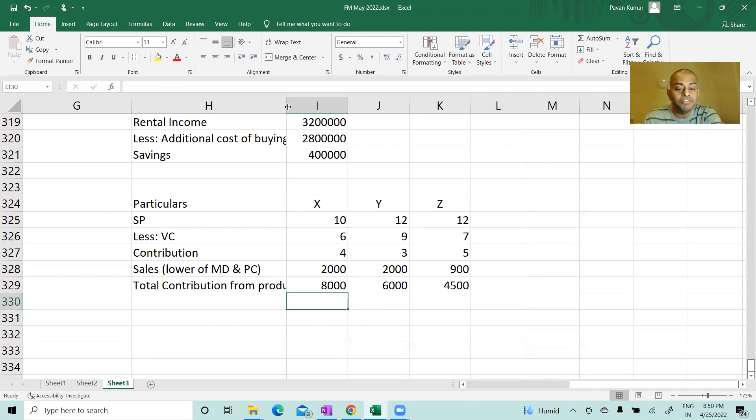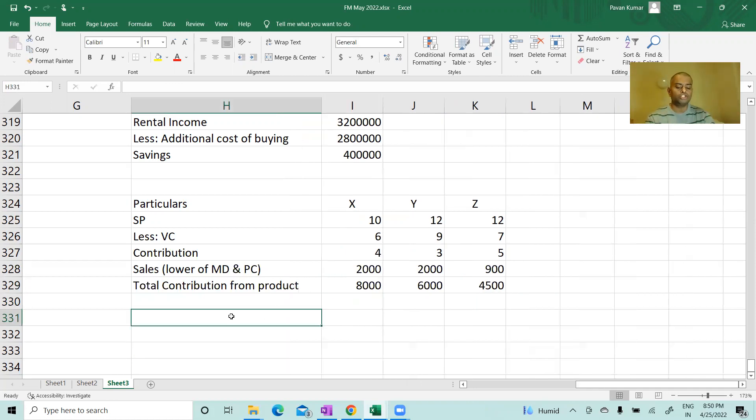Here 8000 you will get, 6000 you will get, 4500 you will get. Now you tell me, using your common sense, which product you will manufacture? Simple conclusion: it is advisable to manufacture product X since the contribution is maximum.